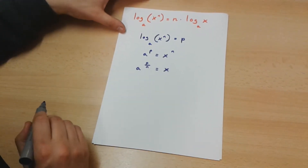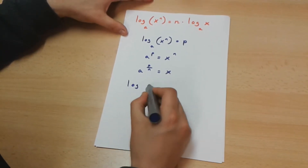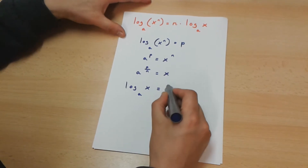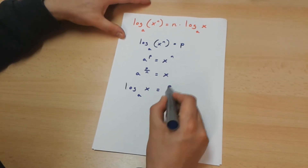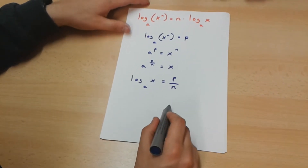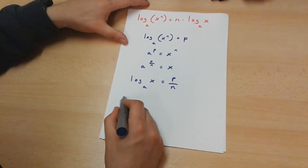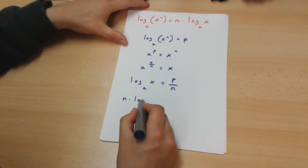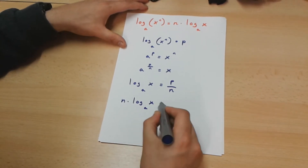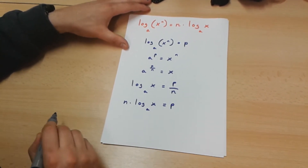From here, we're going to get the logarithm of x to the base a is equal to p over n. And this means that n multiplied by the logarithm of x to the base a is equal to p.